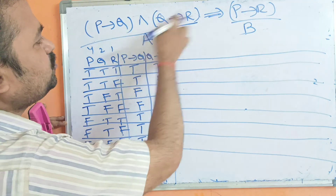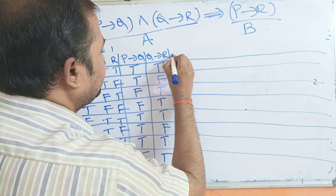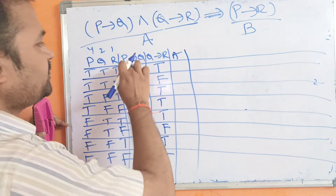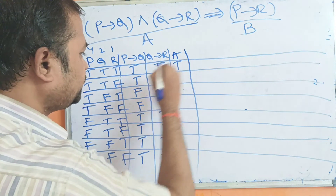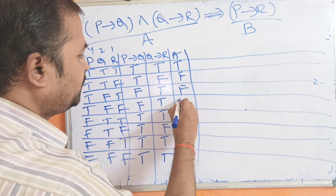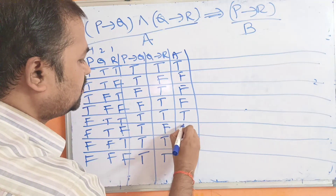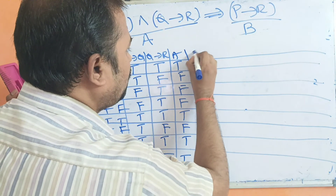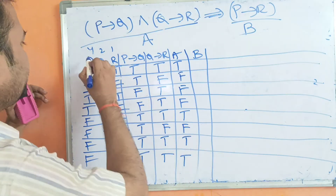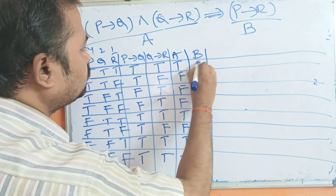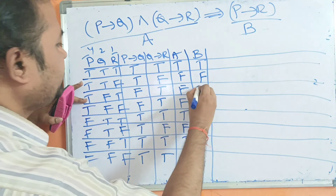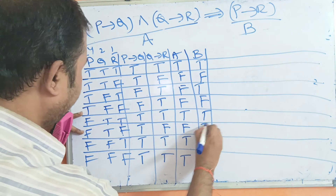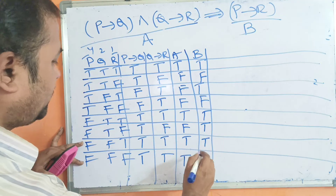Next we compute A = (P→Q) ∧ (Q→R) using AND on those two columns: T∧T=T, T∧F=F, F∧T=F, F∧T=F, T∧T=T, T∧F=F, T∧T=T, T∧T=T. Then we compute B = P→R: T,F,T,F,T,T,T,T. (False only when P=T, R=F, i.e., rows 2 and 4.)